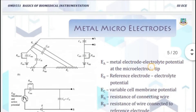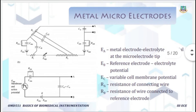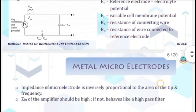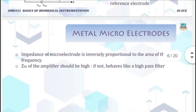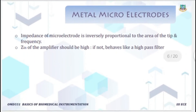To reduce the impedance, some electrolytic processing called chloriding the tip takes place. This is the equivalent circuit of the metal micro electrode. The impedance of the metal micro electrode is inversely proportional to the area of the tip and frequency.